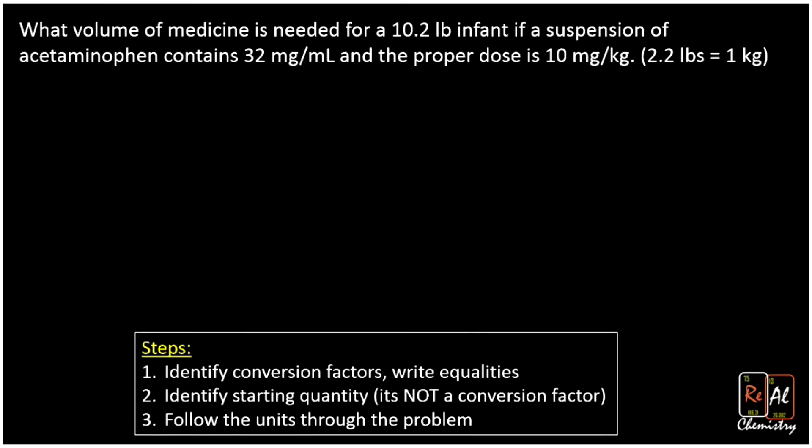Last problem here as an example, and this one gets a little harder. First, we're going to identify the conversion factors. Here there's two. This problem says what volume of medicine is needed for a 10.2 pound infant if a suspension of acetaminophen, that's Tylenol by the way, contains 32 milligrams per milliliter, and the proper dose is 10 milligrams per kilogram. That's a lot. But let's just follow the same steps. We'll talk about what's going on here as we do that.